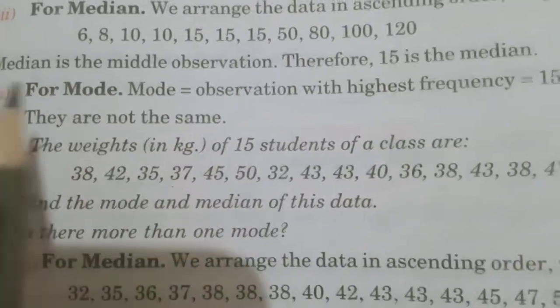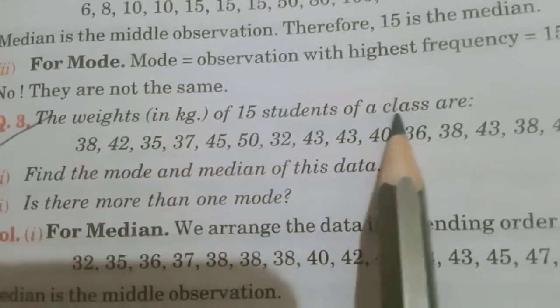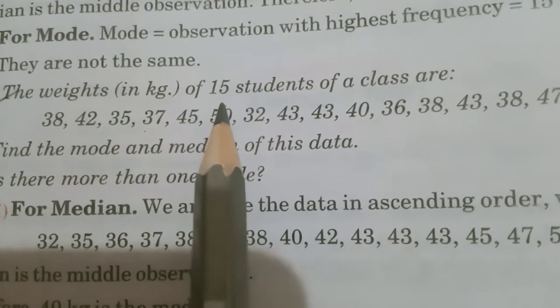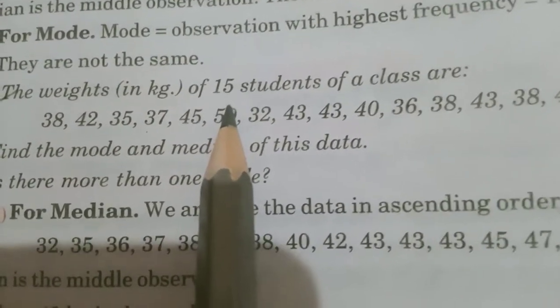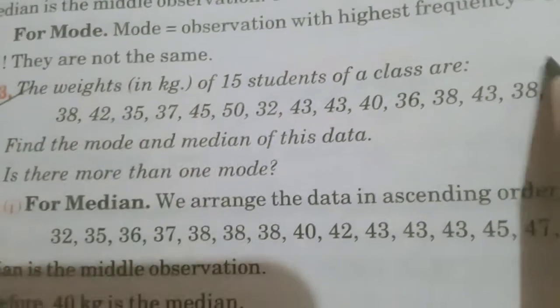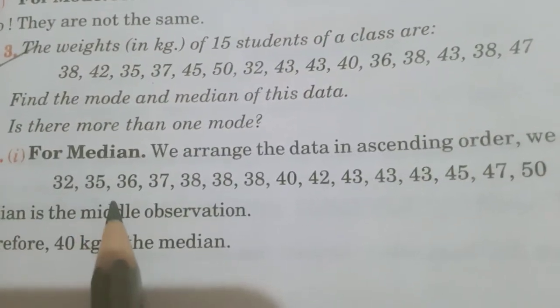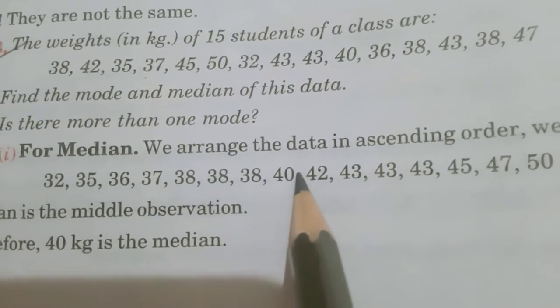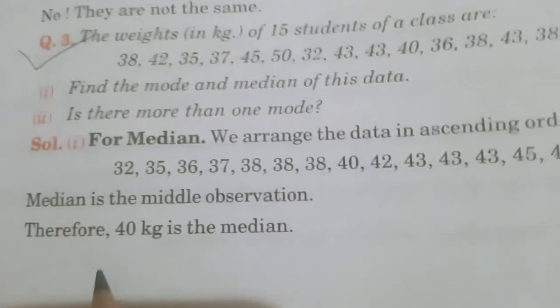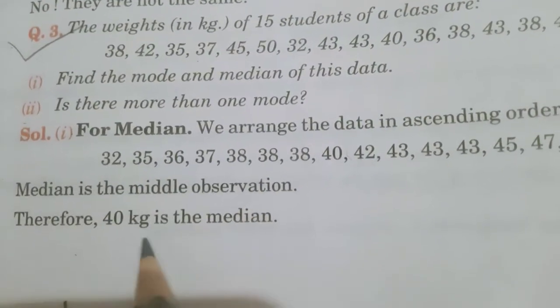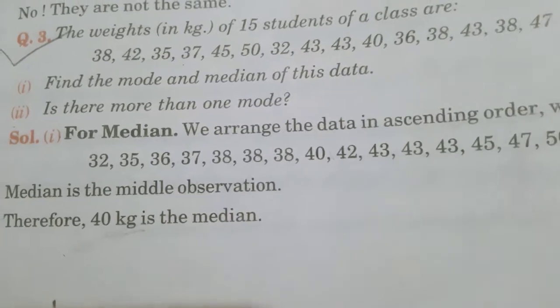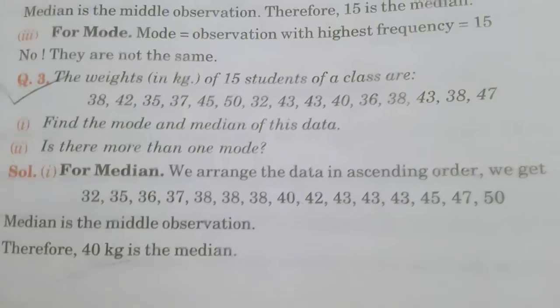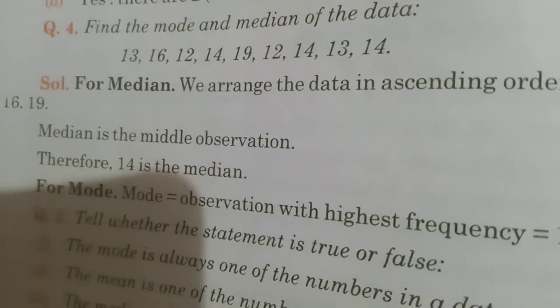Come on to question number 3. Weights in kilogram of 15 students are as follows. 15 students. 15 by 2 is 7.5. Means, 8th observation will be the median. Again, arrange this data in ascending order like this way. And, what will be the 8th observation? 1, 2, 3, 4, 5, 6, 7, 8. 8th observation is 40. Therefore, median of the observation is 40 kilogram. Kilogram word is important.